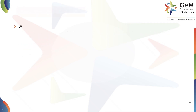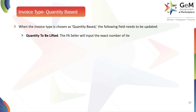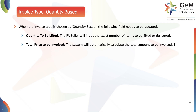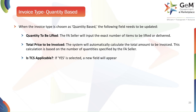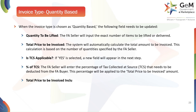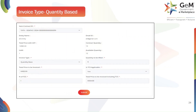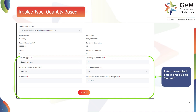When the invoice type is chosen as Quantity Based, the following fields need to be updated. Quantity to be Lifted: the FA seller will input the exact number of items to be delivered. Total Price to be Invoiced: the system will automatically calculate the total amount based on the quantities specified. Is TCS Applicable: if Yes is selected, a new field appears — Percent of TCS — where the FA seller enters the percentage of Tax Collected at Source to be deducted from the FA buyer. Total Price to be Invoiced Including TCS: this is the final amount, including both the base price and the calculated TCS amount. Enter the required details and click Submit to proceed with creating the invoice.